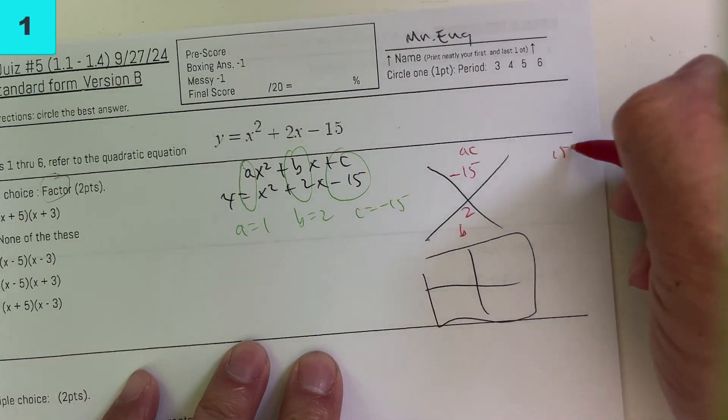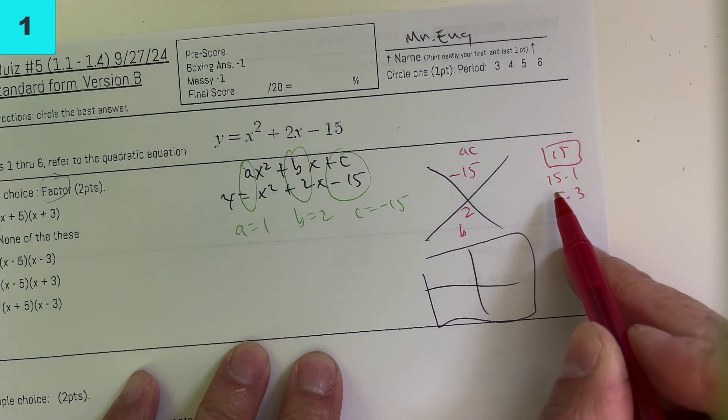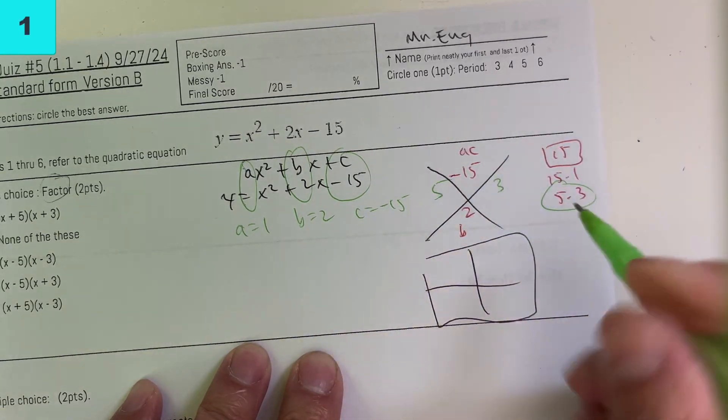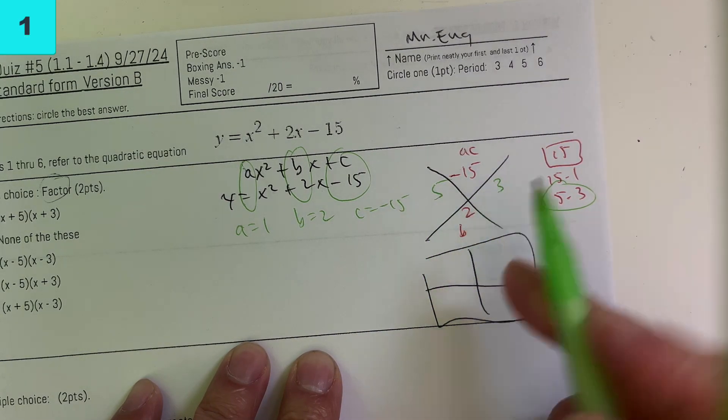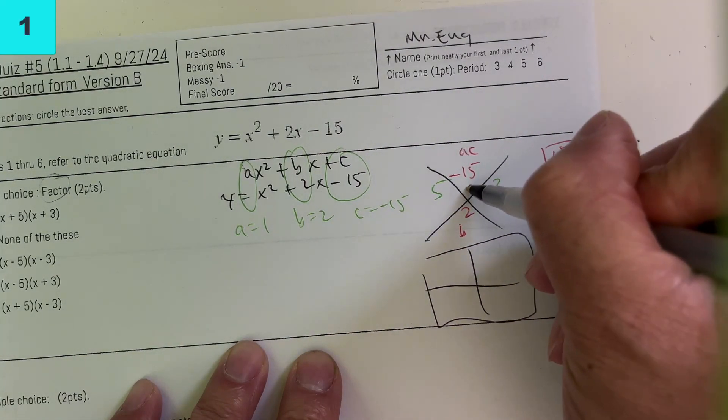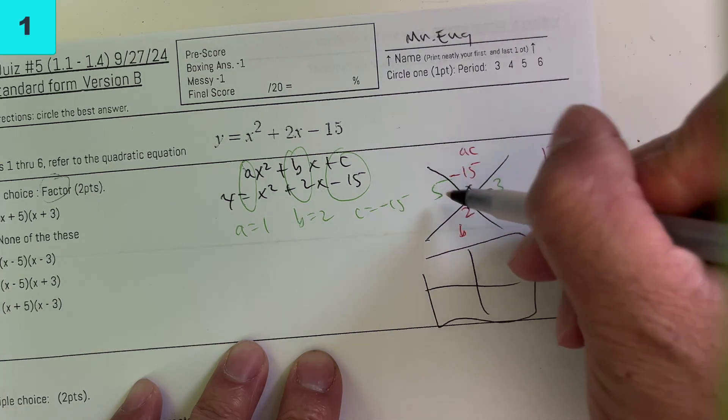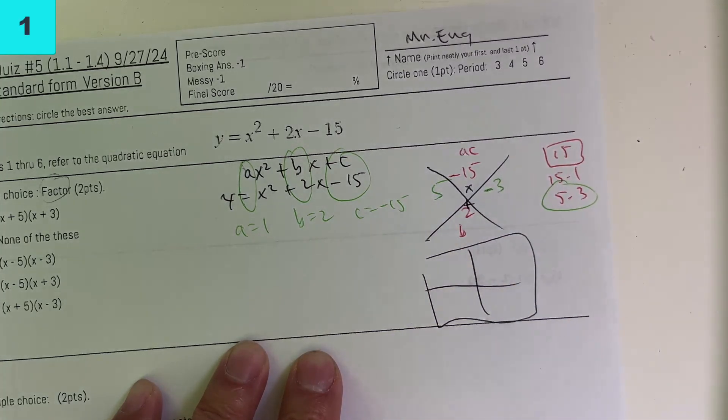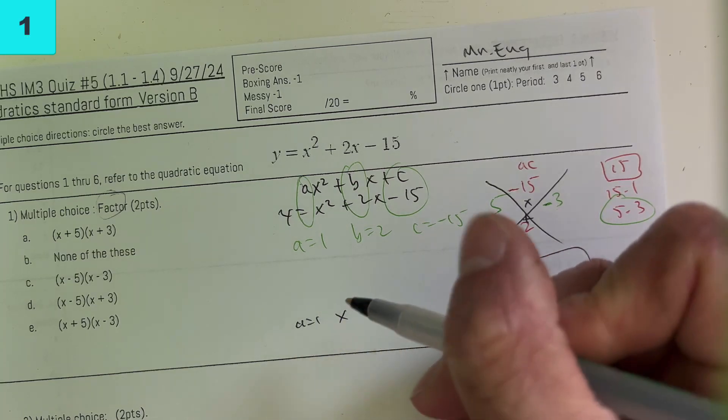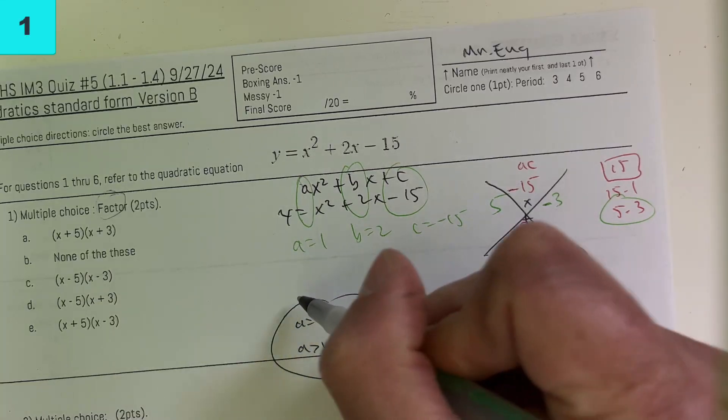You can list out all the factors of 15. Bigger number on the left, you can kind of subtract. This is going to multiply to be negative, so one of these has to be negative. This is going to be positive. So 5 times negative 3 equals negative 15. 5 plus negative 3 or 5 minus 3 equals 2. Now the trick is, if a is equal to 1, you only need to use the x. If a is greater than 1, you have to use the x in the box.